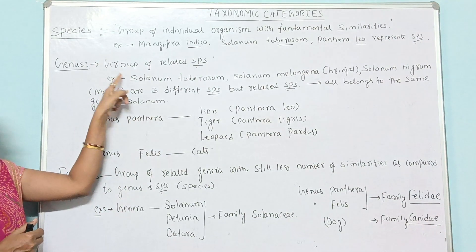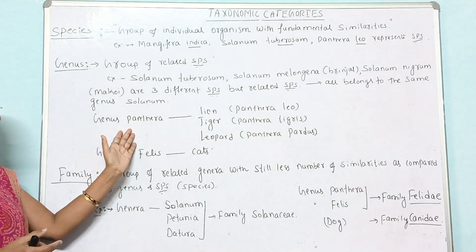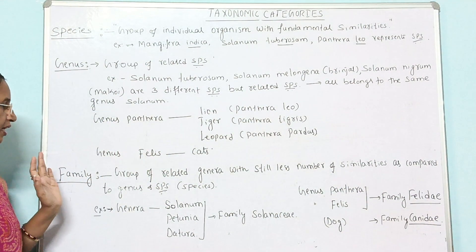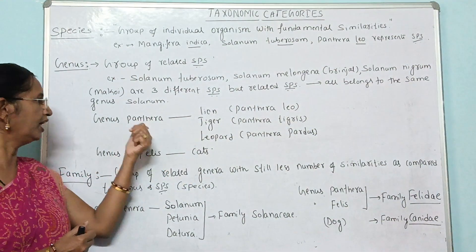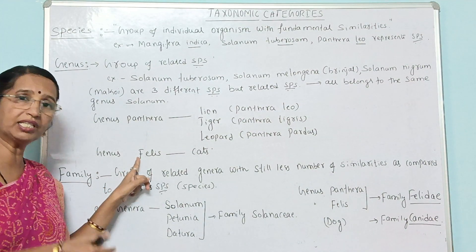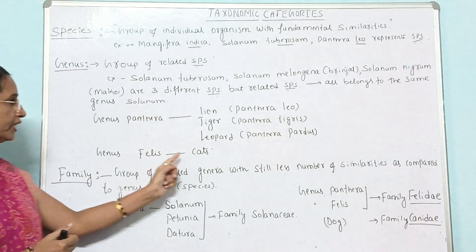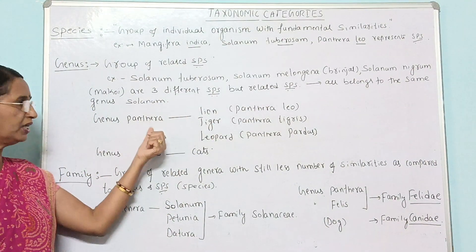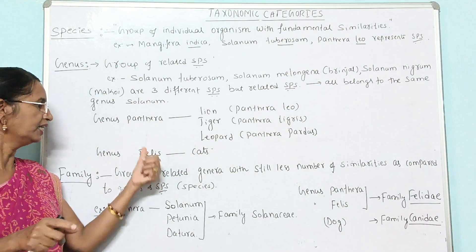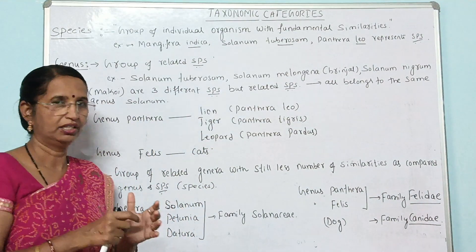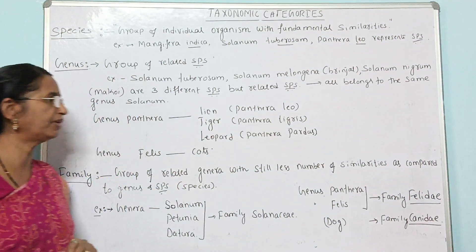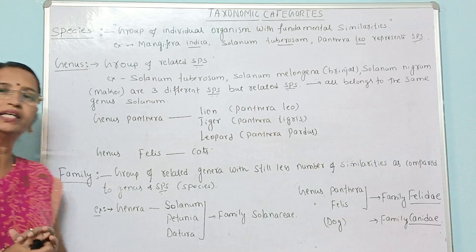Genus is a group of related species with some morphological similarities. There is another genus — Felis. Felis is one genus and Panthera is another genus. Cats cannot be included under Panthera because there are some morphological differences. Hence, cats are placed under the genus Felis. So Felis and Panthera are two different genera — Felis for the cat genus, and Panthera for lion, leopard, and tiger.